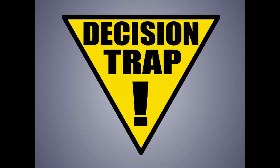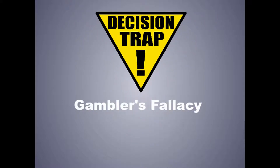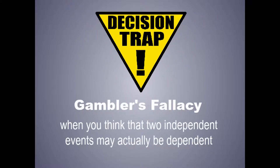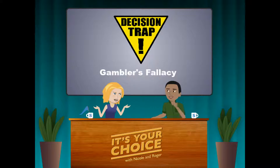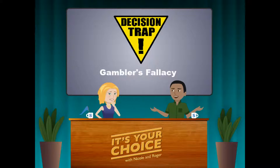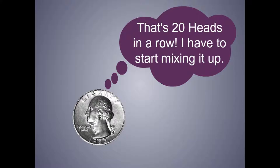You just fell into a trap, Nicole. This is one of the most common traps around — it's called the gambler's fallacy. It happens when you think that two independent events may actually be dependent. You thought the first 20 flips of a coin would change the likelihood of the 21st flip. But actually, the odds haven't changed. The coin doesn't care that it just came up heads 20 times in a row. People get messed up on this because they somehow think the coin is keeping score.